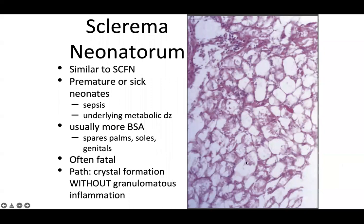Sclerima neonatorum is similar but typically has crystals within adipocytes without as much inflammation. Not having a lot of inflammation is a bad sign — it correlates with prematurity and very sick neonates who can have sepsis and underlying metabolic disease. It usually affects more body surface area, sparing the palms, soles, and genitals, and is often fatal. On pathology, you see crystal formation without granulomatous inflammation.